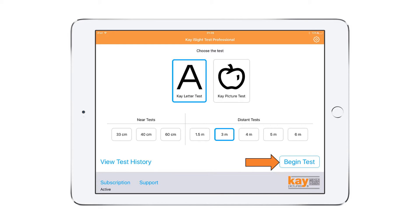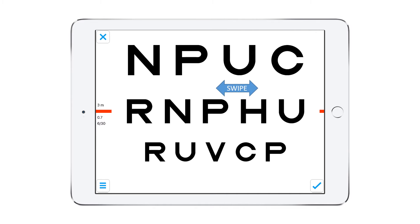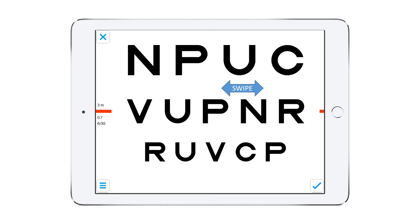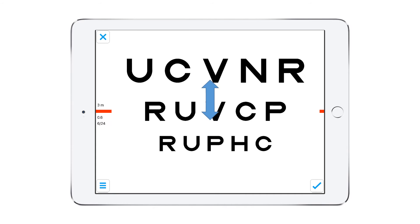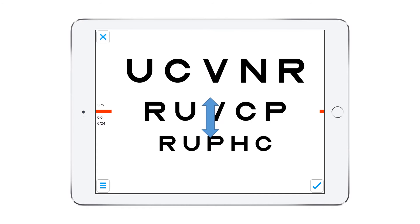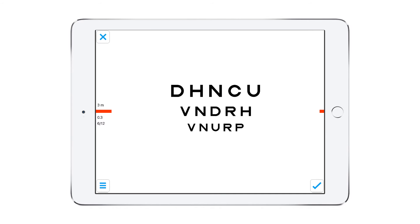When you begin the test, you have a choice of displays. Swiping the screen will refresh the letters shown, and swiping up and down changes the sizes. The displayed size is shown on the left of the middle of the screen.